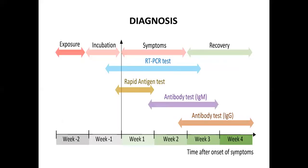For diagnosis of coronavirus: if the patient presents within the first or second week of symptoms, you can perform an RT-PCR test or a rapid antigen test. If the patient presents after two to three weeks and is in the recovery phase, you can look for antibody tests. Initially, the antibody test will be positive for IgM, and after three to four weeks, it will be positive for IgG.